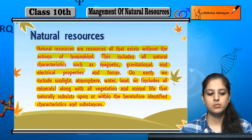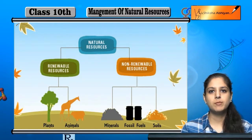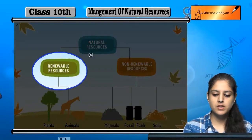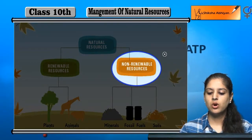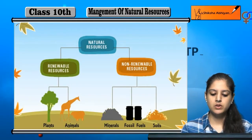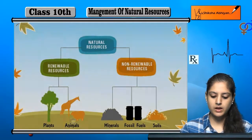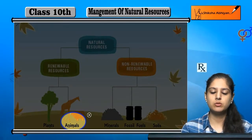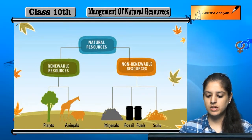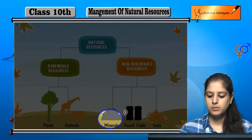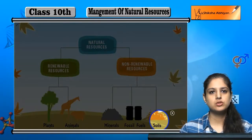Unko hum natural resources bolte hain. Natural resources basically do types ke hote hain — first hai renewable resources, aur second hai non-renewable resources. Renewable resources ke kuch examples hain plants and animals. Non-renewable resources ke kuch examples hain minerals, fossil fuels, and soil.